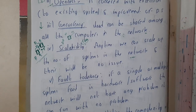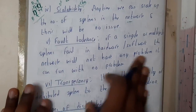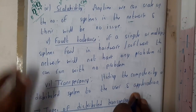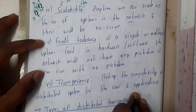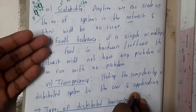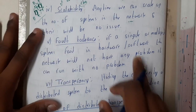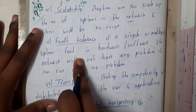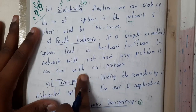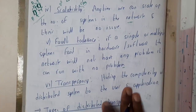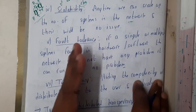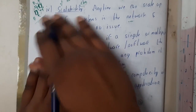Fault tolerance means that when a failure occurs, the system should not stop running. If a single or multiple systems fail — whether in hardware or software — the network should continue to operate without any problem. If one particular component fails, the rest of the system should keep working properly.